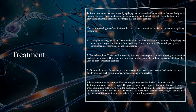Benzodiazepines are often used in emergency situations to stop a seizure that is already in progress. Diazepam and lorazepam are two examples of benzodiazepines that may be used to treat Jacksonian seizures. In some cases, other medications may be used, such as gabapentin and levetiracetam.